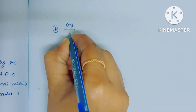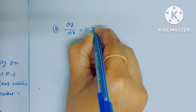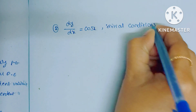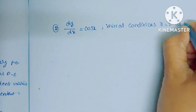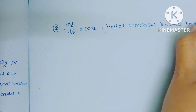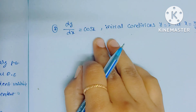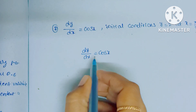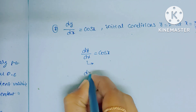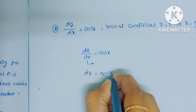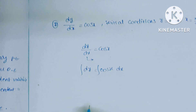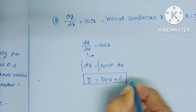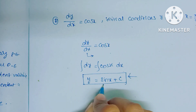Now we will see what is the particular solution. In some problems they give dy/dx = cos x along with initial conditions, like y = 2 at x = π/2. When initial conditions are given, we find the particular solution. Similarly, for dy/dx = cos x, we take dx to this side, integrate on both sides, and get y = sin x + c — this is the general solution.